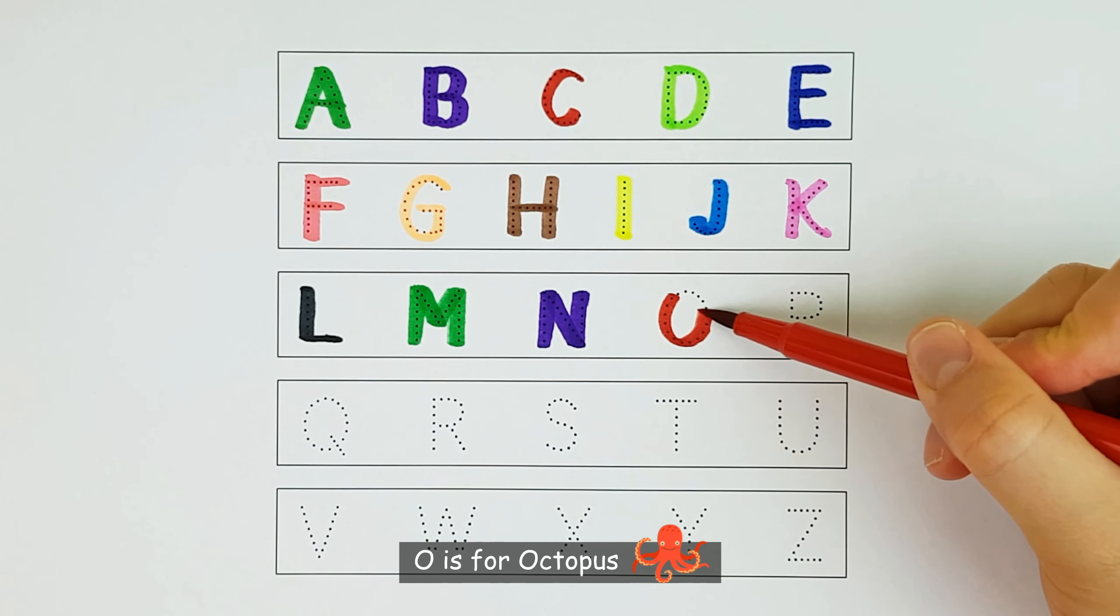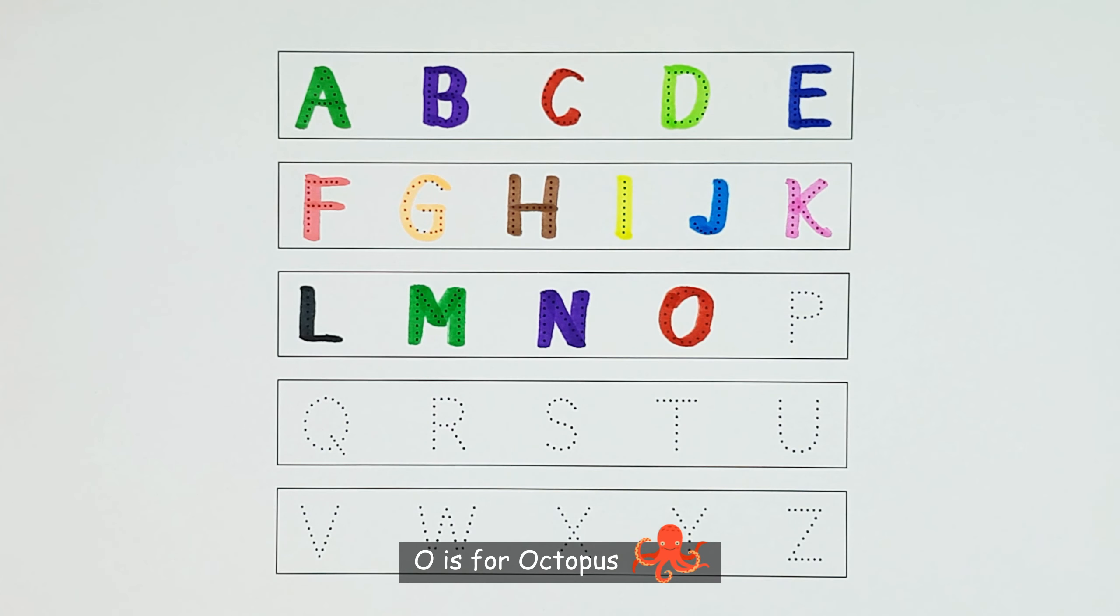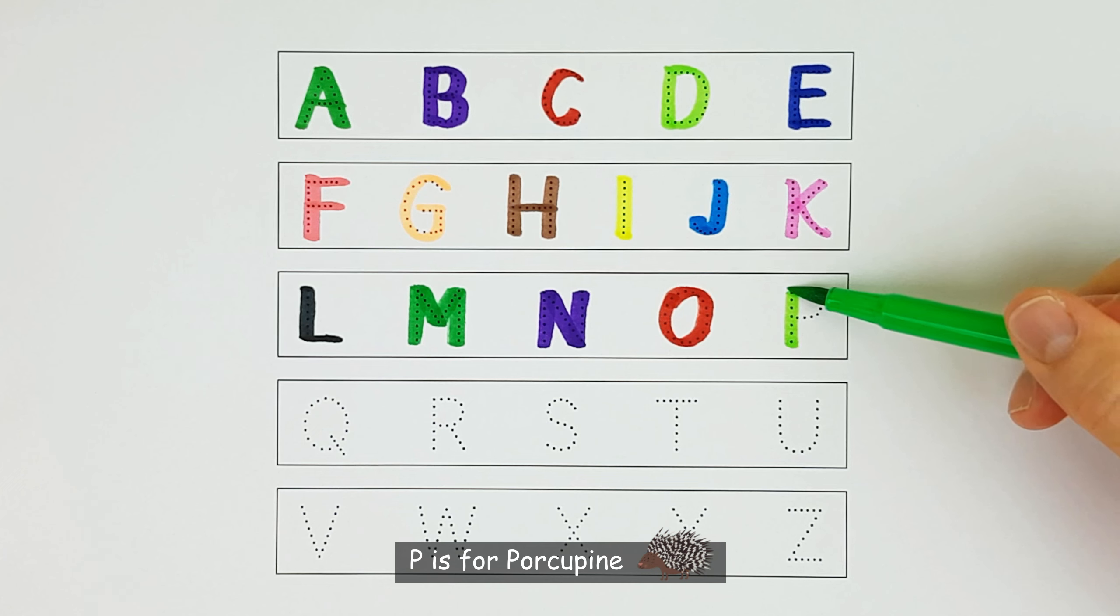O. O is for octopus. O. P. P is for porcupine. P.